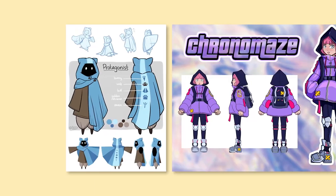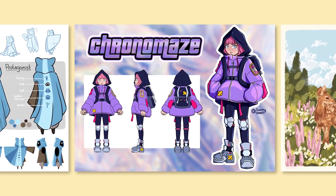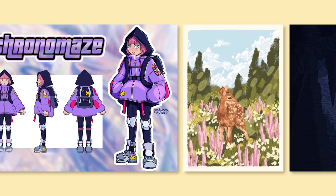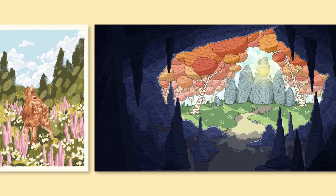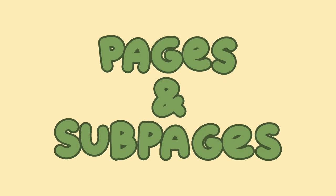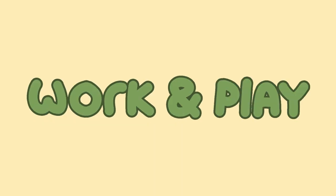First things first: what do you want to make and what do you want your future job to be? For example, I want to be a digital artist. I don't know if that's game art or freelance, but I know my most important work is my digital art. A handy way to keep things organized for yourself and the viewer is pages and sub-pages. Since my skill set is quite varied, I divided my portfolio website into two main categories: work and play.